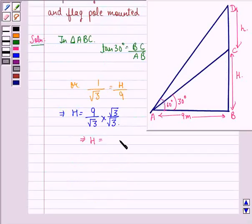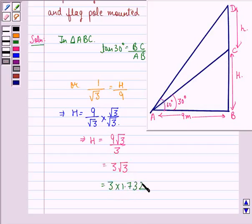On doing this we get H = 9√3/3, and that is equal to 3√3. Now the value of √3 is 1.732, so this becomes equal to 5.196 meters.